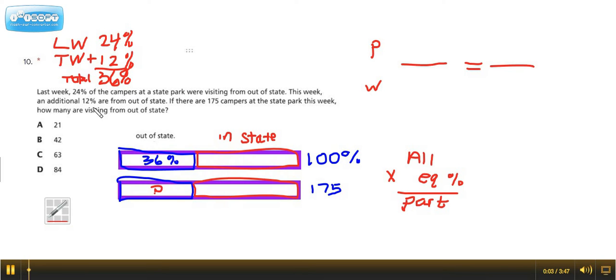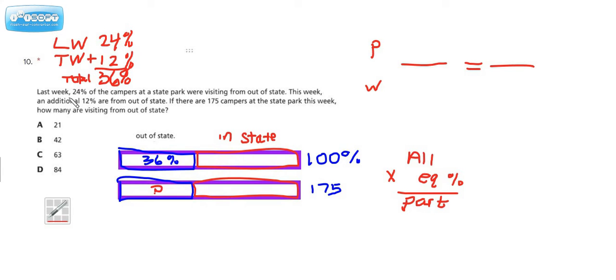Hey everybody, Ms. Dietrich here. We're taking a look at question number 10. Last week, 24% of the campers at a state park were visiting from out of state. This week, an additional 12% are from out of state. If there are 175 campers at the state park this week, how many are visiting from out of state?